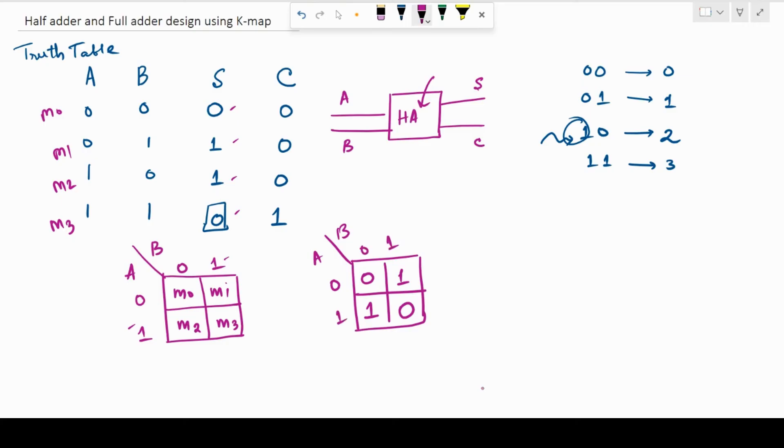Now, this is called a two variable K-map. Now, how can I find the expression from this? So, I have to find the expression of S in terms of A and B from this grid. How can I do it?